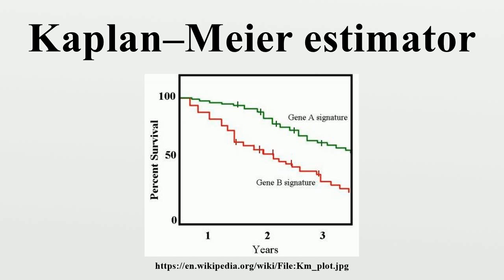The Kaplan-Meier estimator is the non-parametric maximum likelihood estimate of S, where the maximum is taken over the set of all piecewise constant survival curves with breakpoints at the event times t. It is a product of the form. When there is no censoring, n_i is just the number of survivors just prior to time t_i. With censoring, n_i is the number of survivors minus the number of losses, as only those surviving cases still being observed are at risk of death.